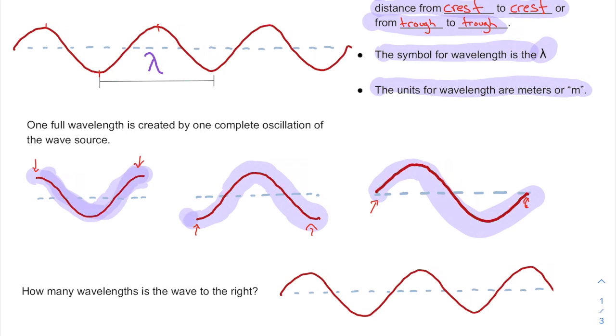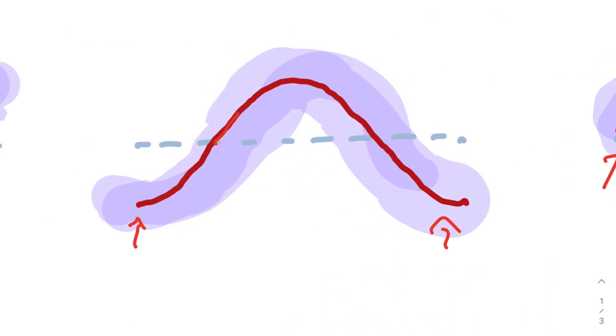So if you see this pattern, this pattern, or this pattern, that's one wavelength. Make sure that you're not just looking at the crest only without going down below the equilibrium line. You got to see the whole shape there. So the equilibrium line is a nice thing to see.